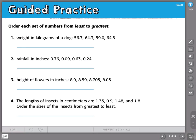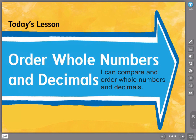Here are a few guided practice problems for you to practice what we've talked about today. Remember, you can either plot your values on a number line, or you can line up the values by the decimal point and annex zeros to put them in order from least to greatest. That brings us to the end of today's lesson on ordering whole numbers and decimals. Our I can statement was: I can compare and order whole numbers and decimals.